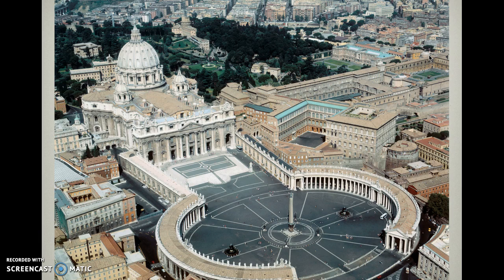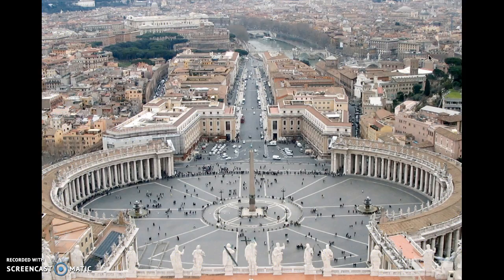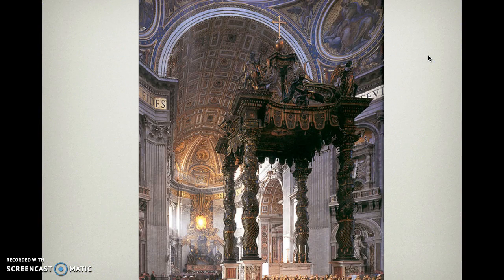Look at the architecture of baroque designer Bernini — he designed Saint Peter's. Notice how large and extravagant everything is. Notice how tiny the people look compared to the giant columns surrounding Saint Peter's. Also notice the outline of the buildings is in the shape of a key — referencing El Greco's painting where Saint Peter dangles keys, because according to tradition Saint Peter was the first pope and the pope has the keys to the kingdom of heaven.